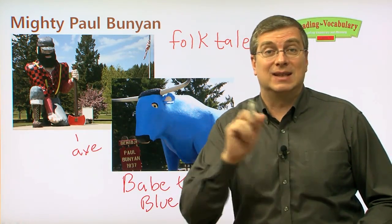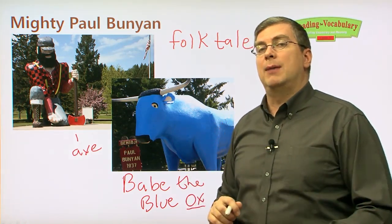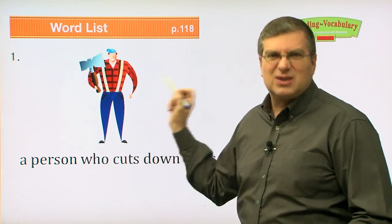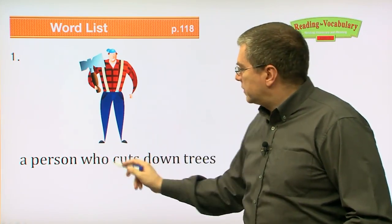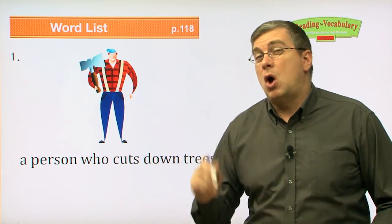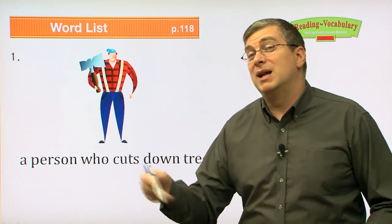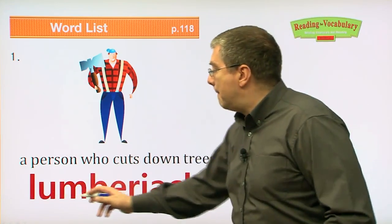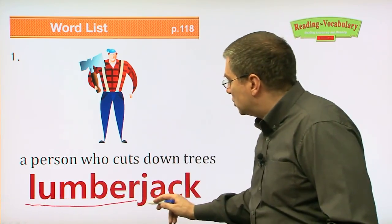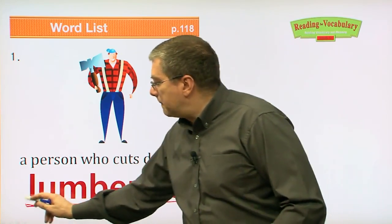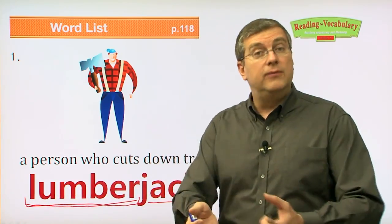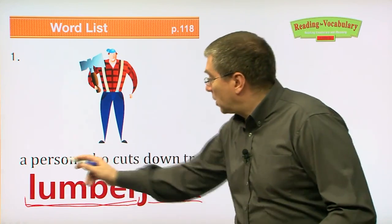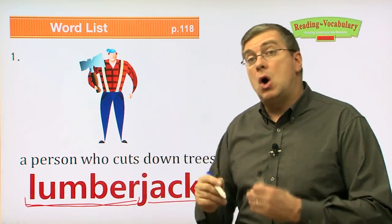First let's start with the vocabulary words. First of all, we have this person — he looks familiar, he kind of looks like Paul Bunyan — and this word describes a person who cuts down trees. That describes Paul Bunyan's job. What was he? He was a lumberjack. Now you may know the word lumber — lumber is wood. Wood from trees is lumber. Jack may just be the name of a person. A lumberjack is a person who cuts down trees. Paul Bunyan was a lumberjack.